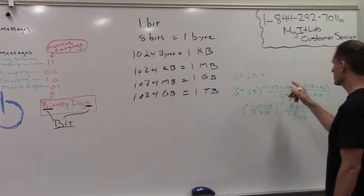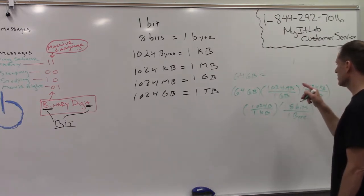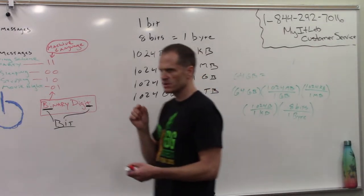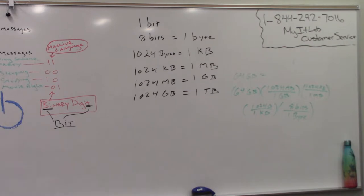So if I do 64 times 1,024 times 1,024 times 1,024 times 8, I know how many single zeros and ones my 64 gigabyte SD card can store. I know how many circuits are on that card that can go into an on-off state. And that number works out to 64 times 1,024 three times times 8.